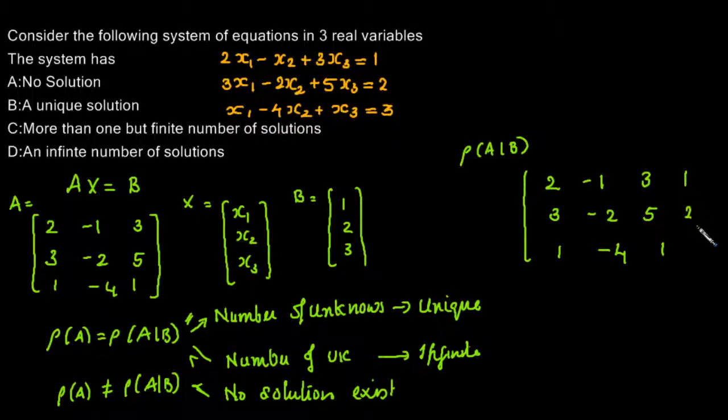We will convert this matrix into row echelon form by using elementary row transformation. I am going to interchange the last and the first row to make calculations a bit more easier.